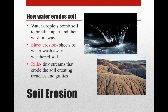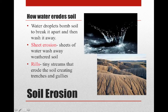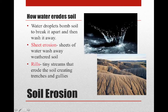Moving on to soil erosion — specifically how water erodes soil. Water acts like a tiny bomb on the soil, causing grains to fly up on impact. Sheet erosion occurs when sheets of water wash away weathered soil, like a river carrying sediments. On hills, water washes down in sheets, creating tiny cracks called rills — tiny streams that erode further into trenches and gullies.